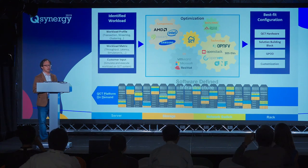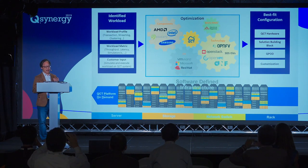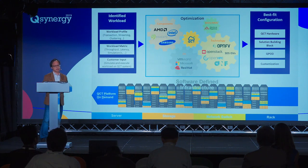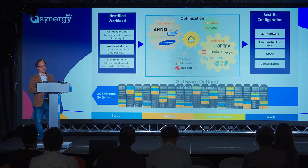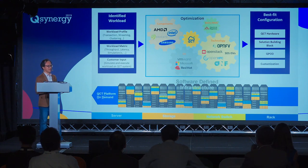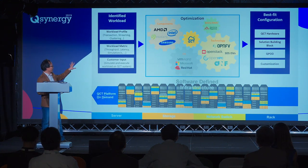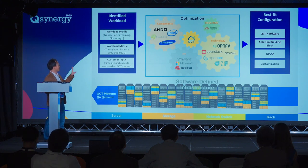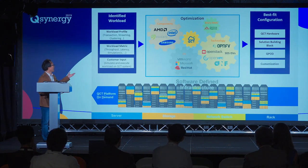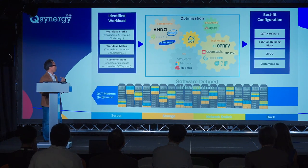You might want to know our methodology for how we optimize workloads for customers. First, you have to identify which workload is to be optimized. Second, we need to define the workload metrics — that is, some method to evaluate how good the performance is for that specific workload. Then we do the optimization work, which involves a lot of back-and-forth tuning. We optimize the hardware configuration and fine-tune the firmware settings — the BIOS or BMC. The end result is the best-fit configuration we can provide to customers.